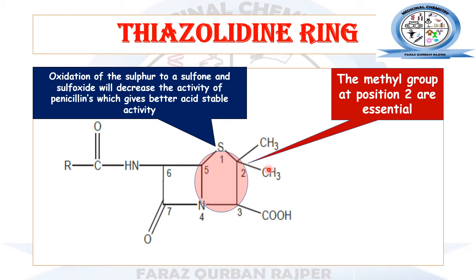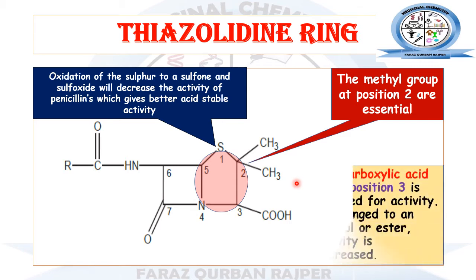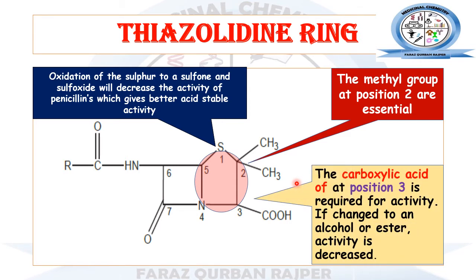At the second position of the thiazolidine ring, there are two methyl groups. These two methyl groups are essential for the antibacterial activity of penicillin, so they must be left unsubstituted. If we substitute these two methyl groups with any other functional group or ring, the antibacterial activity of penicillin will be decreased.